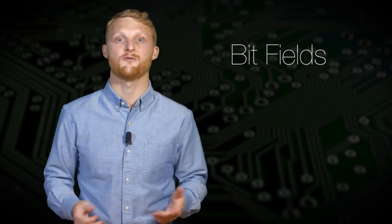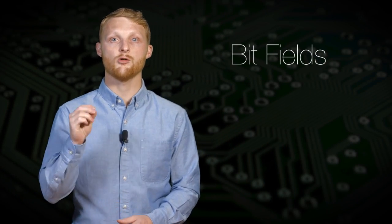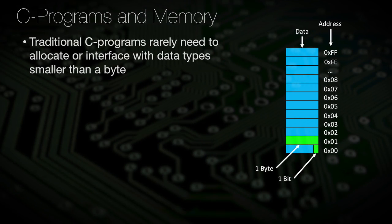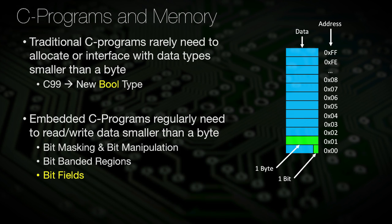In this video, we will talk about structure bitfields. In general C programming, we rarely need to use data types smaller than a byte. A microcontroller's data memory does not even allow for an address that is smaller than a byte, because all memory is byte addressable. Conversely, there are many pieces of data that we do treat as Boolean. The C99 standard introduced a new type called bool to help track these types more effectively. In contrast, microcontroller peripheral memory regularly tracks smaller than byte-sized data, but packs it into a larger data type with other smaller bitfields to store information.